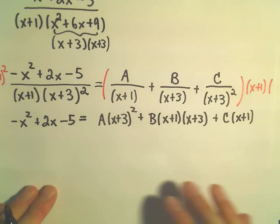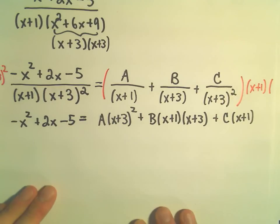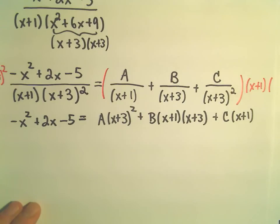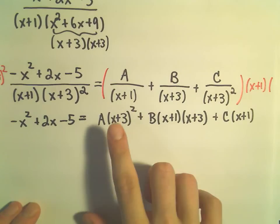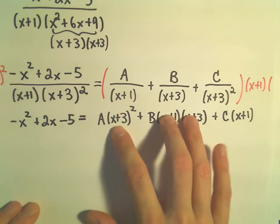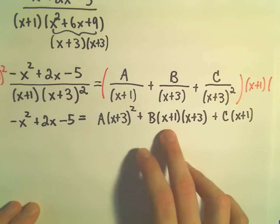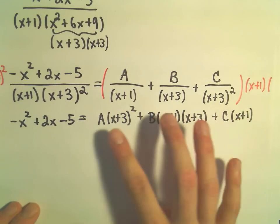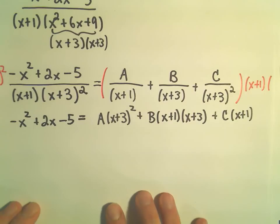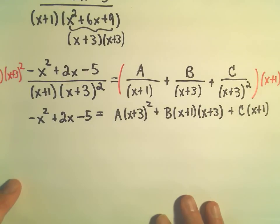Now I've got this equation with no fractions. We could use the trick of plugging in x equals negative 3 to solve for c, or x equals negative 1 to solve for a. But I'm still not sure how to solve for b — eventually we'd have to equate coefficients. So I'm going to go ahead and do that.